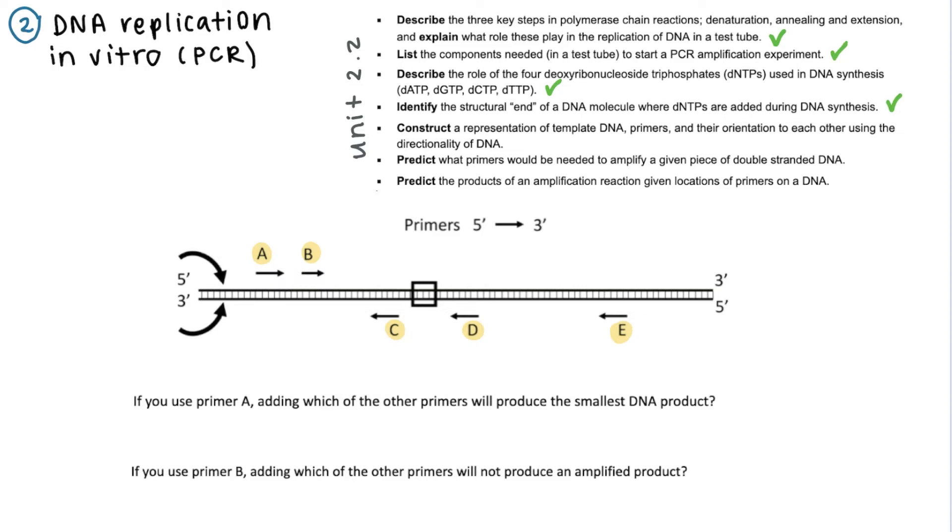This second example is from the unit 2.2 practice questions, which can be found in the student drive folder. So in this question, all the letters are different primers that exist for the DNA sequence that's in the middle. The first question is asking that if you use primer A.